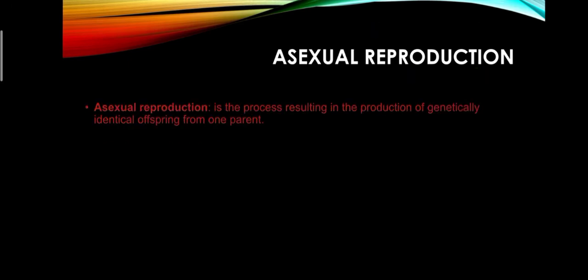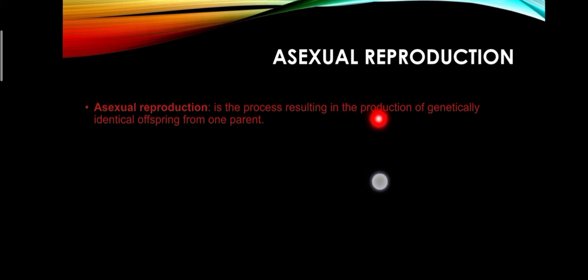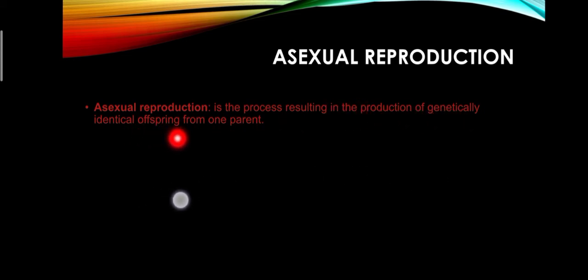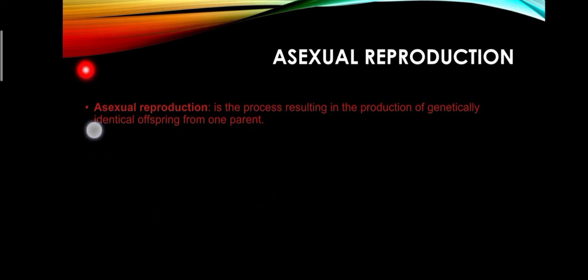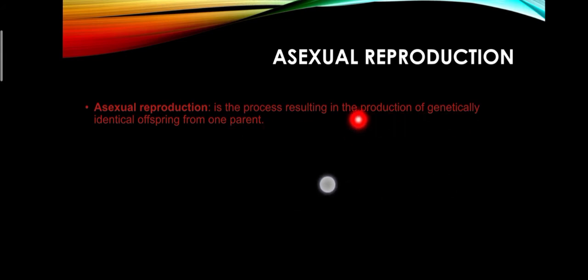Asexual reproduction is the process that results in the production of genetically identical offspring from one parent.